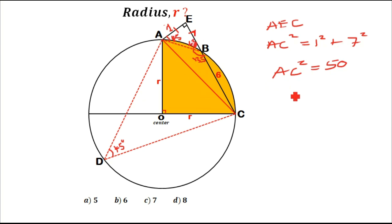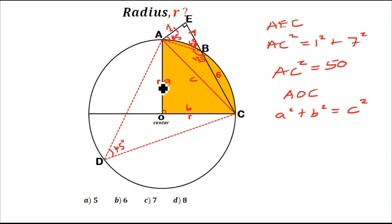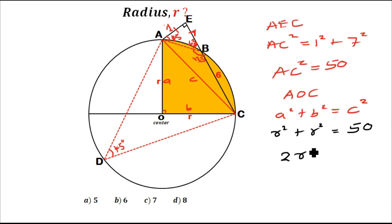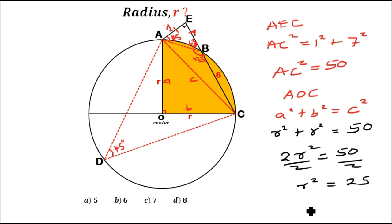Now having found AC, we look at triangle AOC, which is also a right-angle triangle where AC is the hypotenuse. By Pythagoras' theorem with both legs equal to R: R² + R² = AC² = 50. So 2R² = 50, dividing both sides by 2 gives R² = 25, and taking the square root gives R = 5.